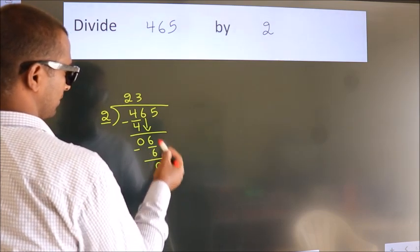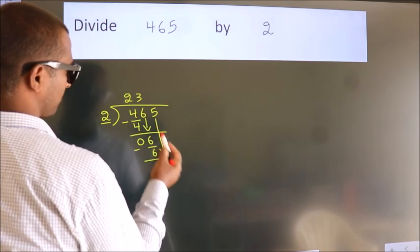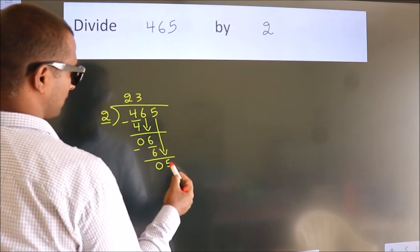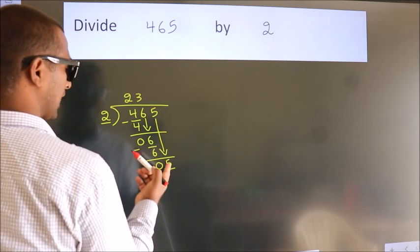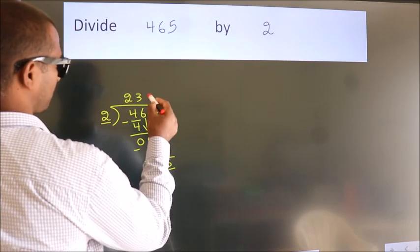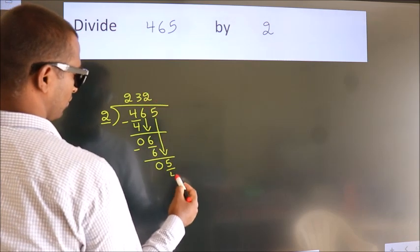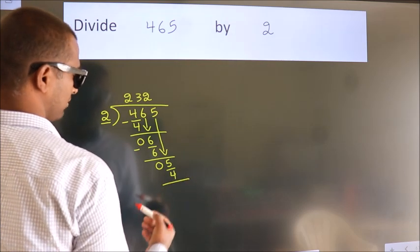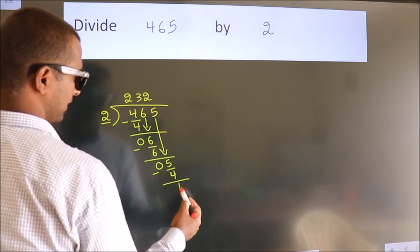After this, bring down the beside number. So, 5 down. So, 5. A number close to 5. In 2 table is 2 2's, 4. Now, we subtract. We get 1.